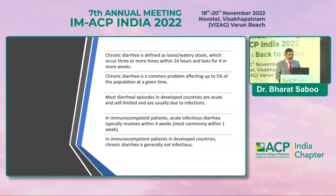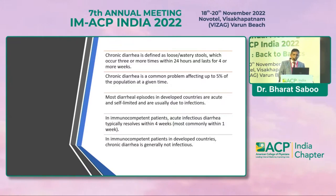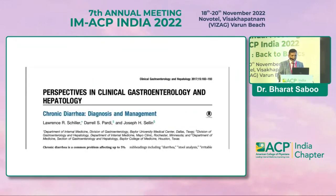Chronic diarrhea is defined as loose or watery stool occurring three or more times within 24 hours, lasting four or more weeks. It is a very common problem; five percent of the population suffers from it. Most episodes in developed countries are acute and self-limited, usually due to infections. In immunocompetent patients, acute infectious diarrhea typically resolves within four weeks, and chronic diarrhea is generally not infectious.